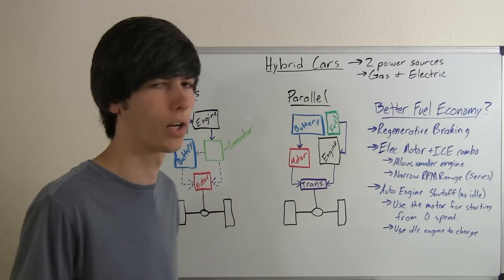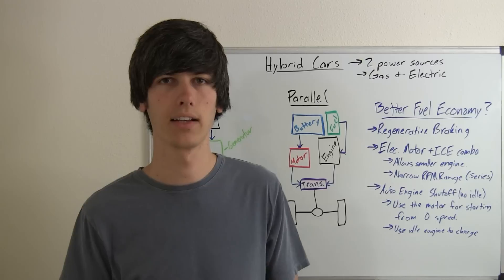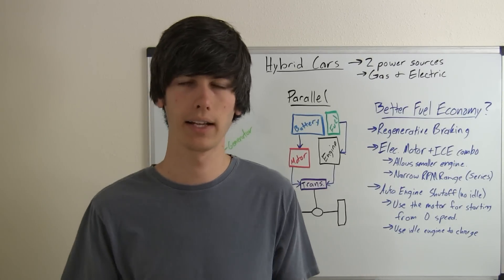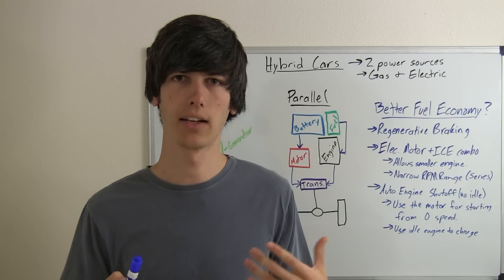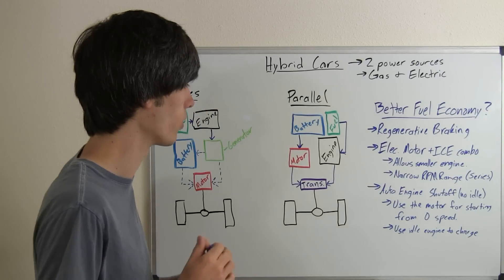Finally, there's the auto engine shutoff. When you come to a stop, you kill the engine. To start accelerating, you can just use the power from the battery, send that to the motor, and then accelerate, then turn on your engine and regenerate power so that you can continue on to higher speeds.